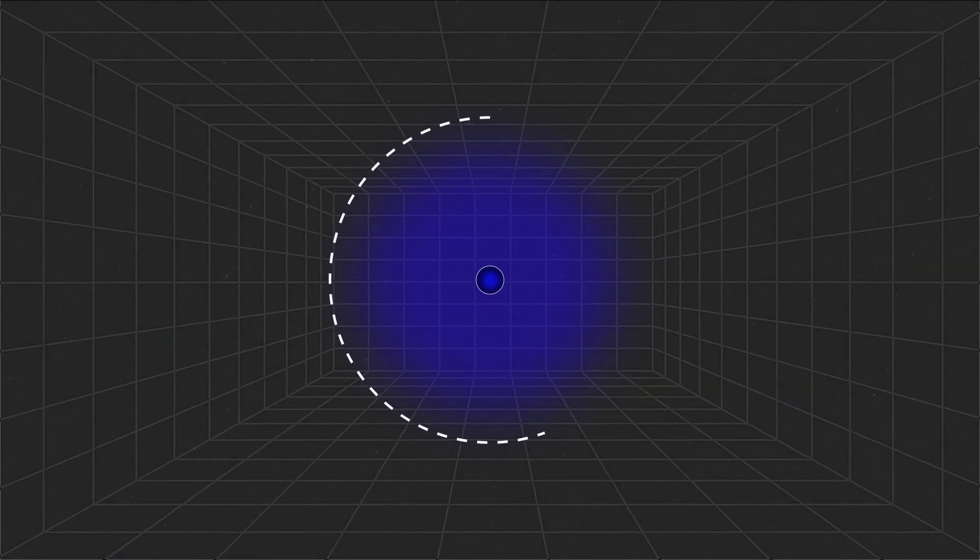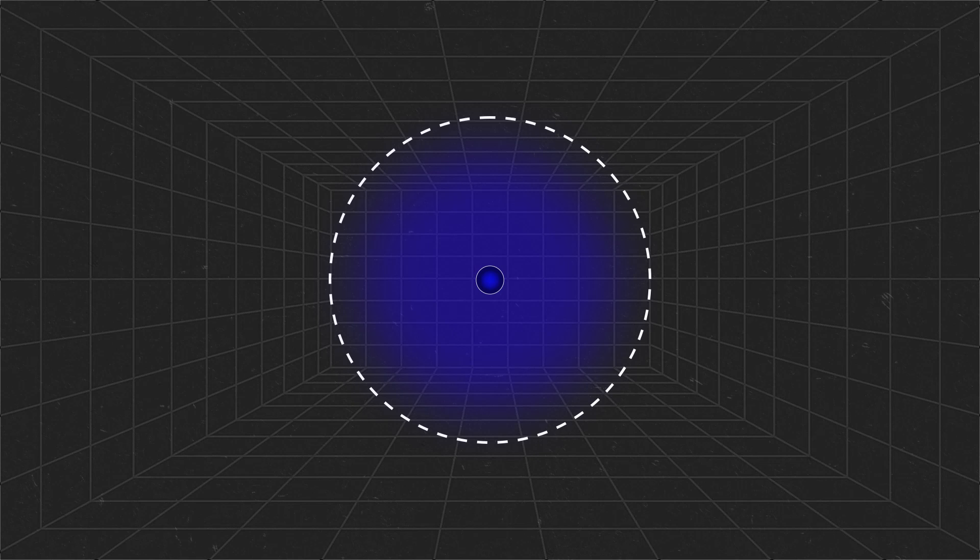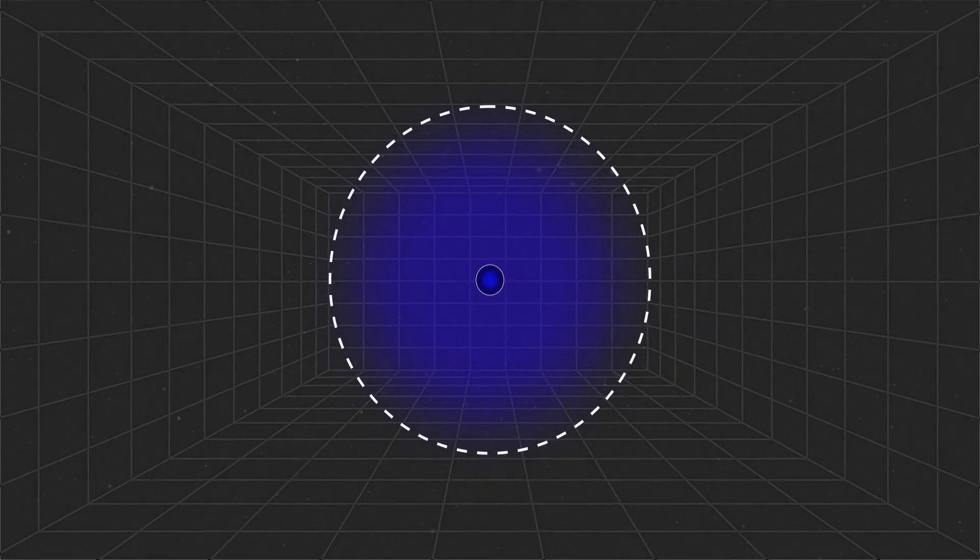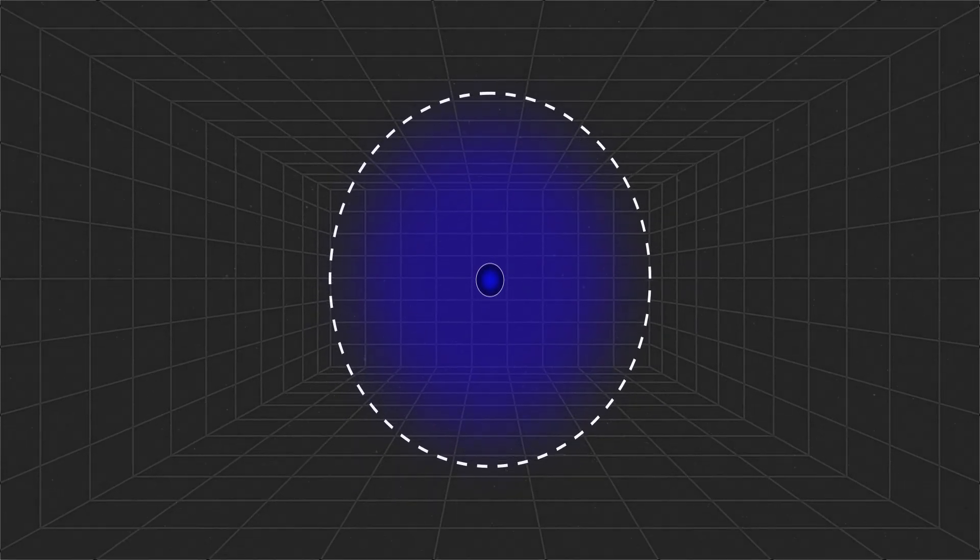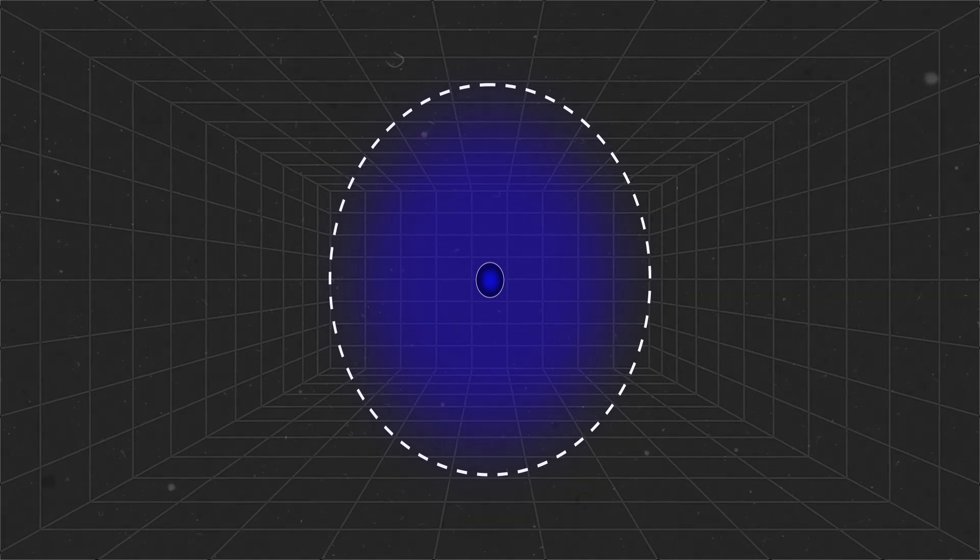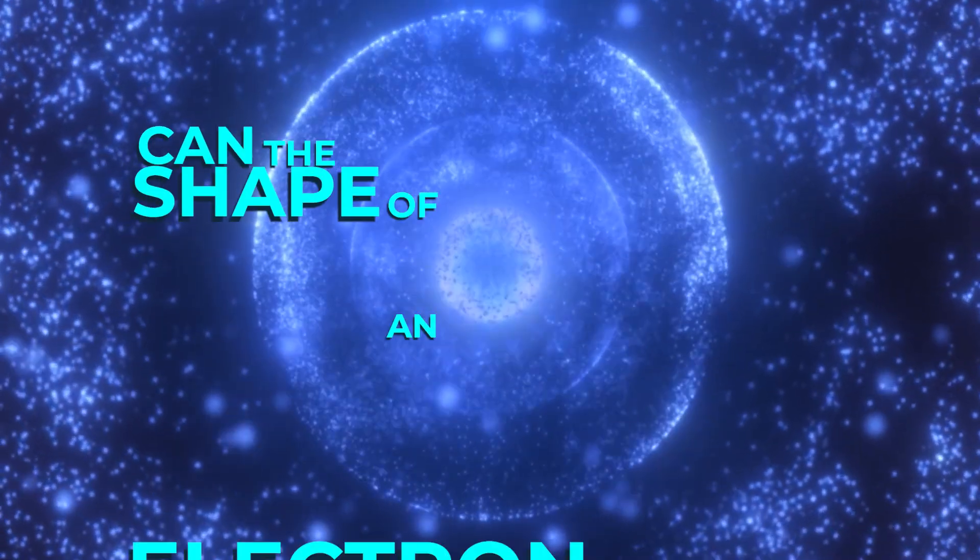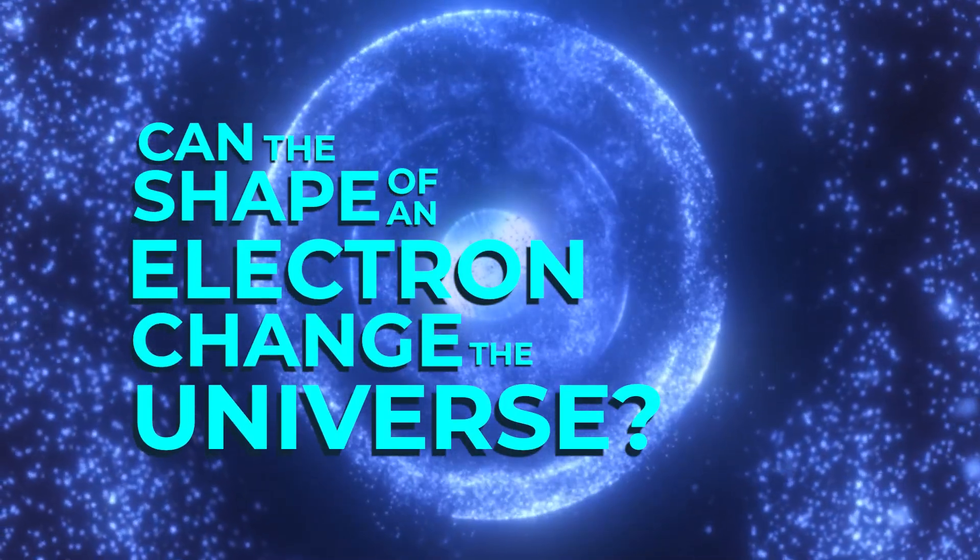The answer might come from the electron. If it isn't perfectly round like we assumed, if it has a slight north and south pole, this small effect might be the answer physicists are looking for. So the question becomes, can the shape of an electron change the universe?